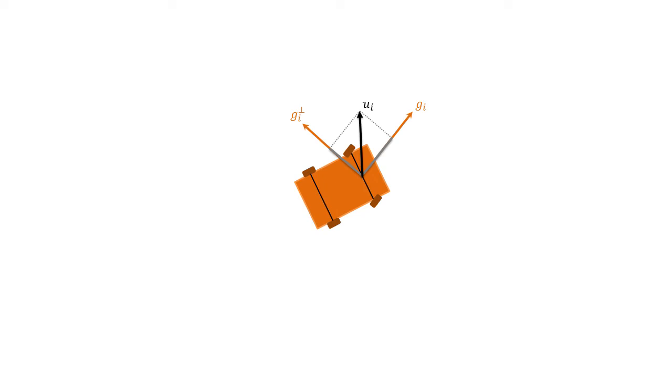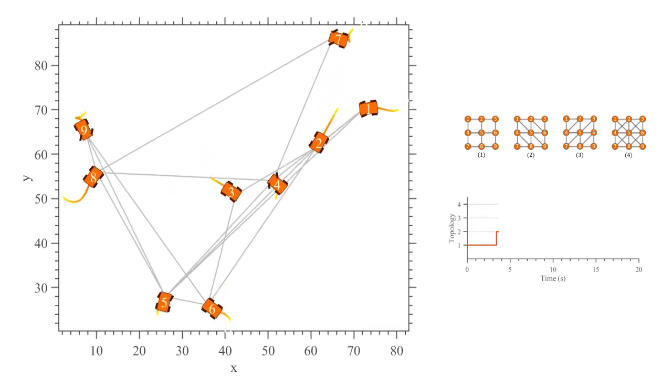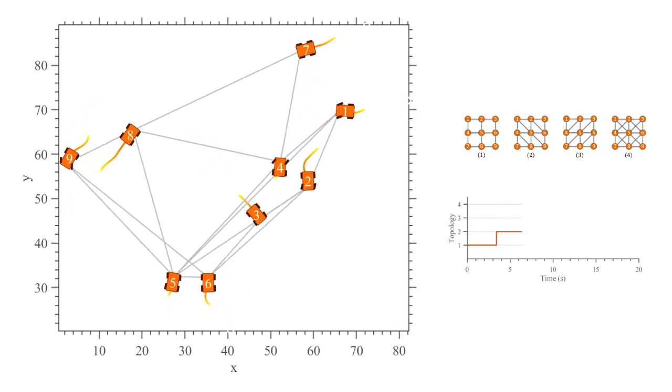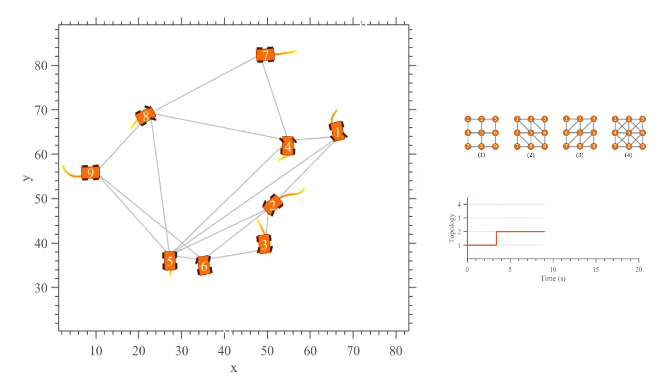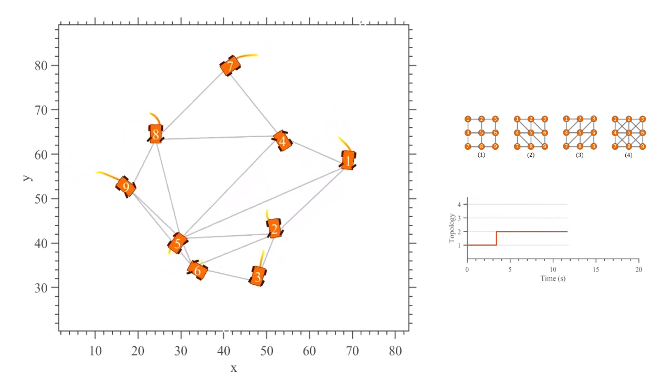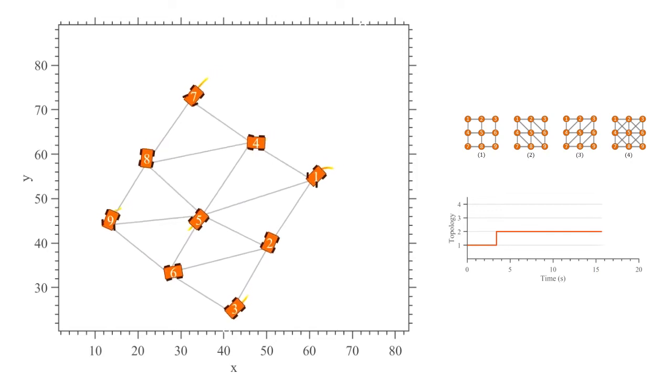Similar to unicycles, this strategy is robust to input saturations and unmodeled dynamics. In a similar simulation for nine cars with the driving and steering velocities saturated and subject to unknown dynamics, the agents achieve the square grid desired formation without collision under a switching sensing topology.